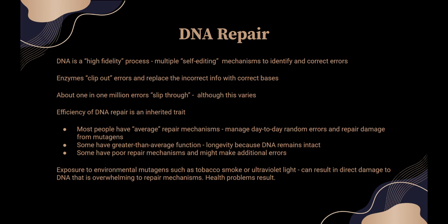As people get older, that repair ability is a little compromised. Some have greater than average function — the DNA remains intact, they may have longer telomeres, those little caps at the end of the DNA that protect them, or other repair strategies, and those people will frequently have longevity. Some people have poorer repair mechanisms, like people with BRCA1, and they are more prone to make errors. If you repeatedly expose your cells to environmental mutagens like tobacco smoke, processed meat, or ultraviolet light, you can directly damage your DNA and potentially overwhelm your repair mechanisms — and that's when you get health problems.